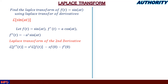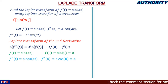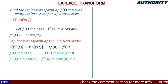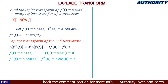We need to find f(0) and f'(0). Since f(t) = sin(at), f(0) = sin(0) = 0. And since f'(t) = a·cos(at), f'(0) = a·cos(0) = a·1 = a. So f(0) = 0 and f'(0) = a.